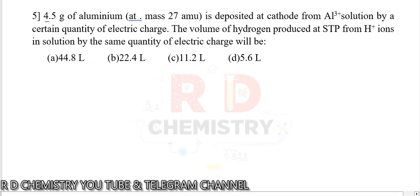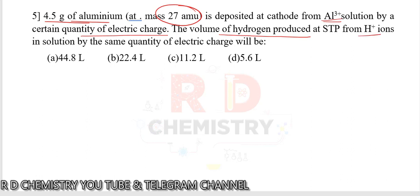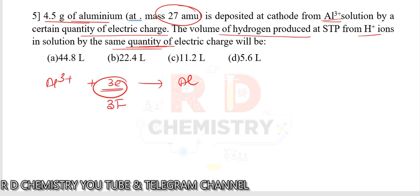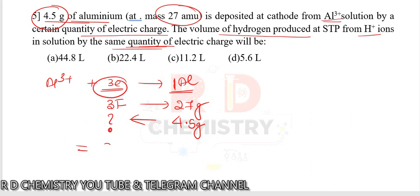Question 5. 4.5 grams of aluminum (atomic mass 27) is deposited from Al3+ solution. Al3+ takes 3 moles of electrons — 3 faradays — to deposit 1 mole (27 g) of aluminum. Since 4.5 grams is deposited, the faradays passed equals 3 times 4.5 divided by 27, which equals 0.5 faraday.